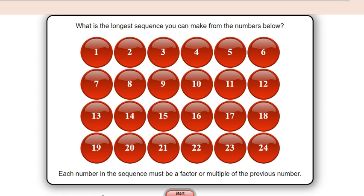Students can be seated in pairs and they can be given a number board. As you can see, numbers from 1 to 24 are written. It can be more. Now how the game has to be played: each number in the sequence must be a factor or a multiple of the previous number.